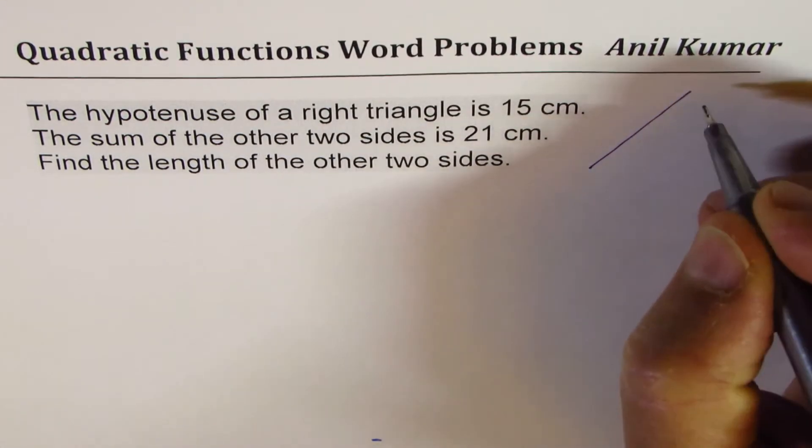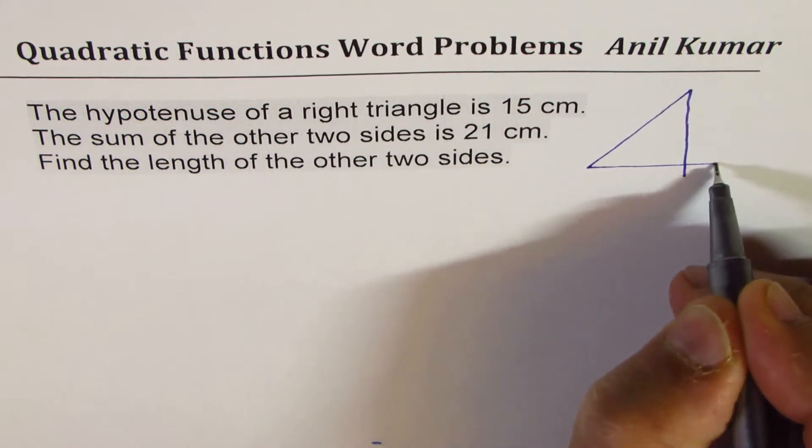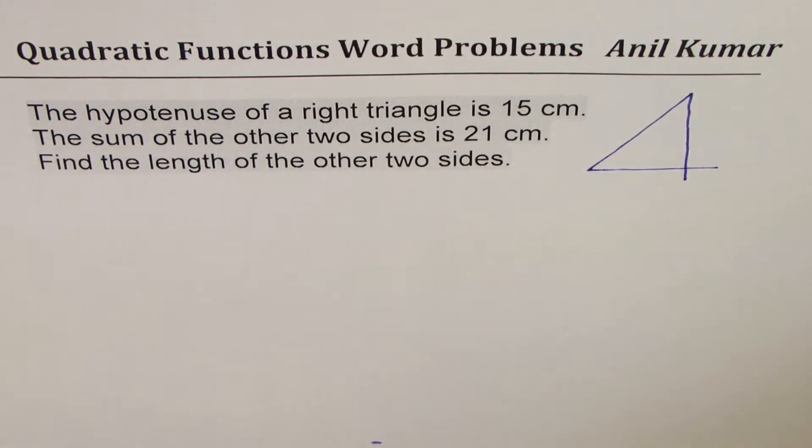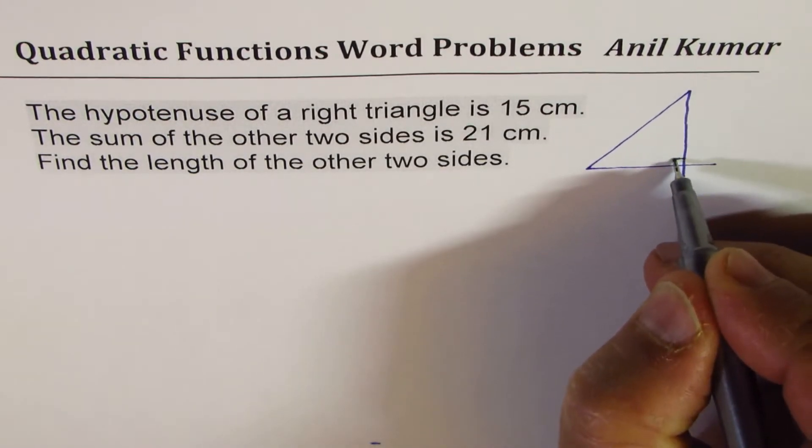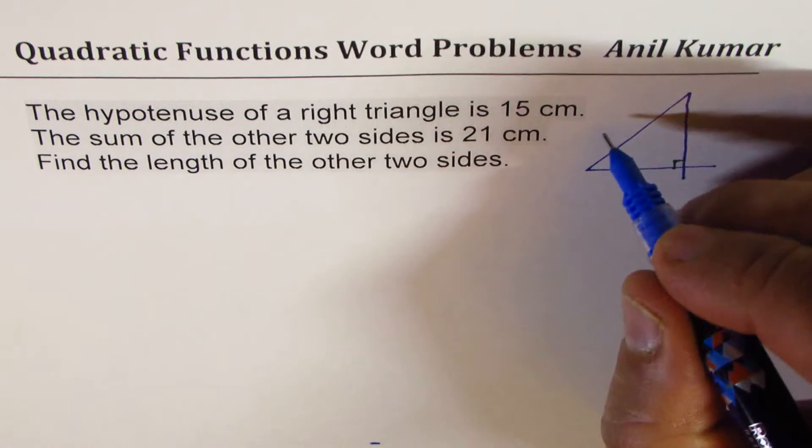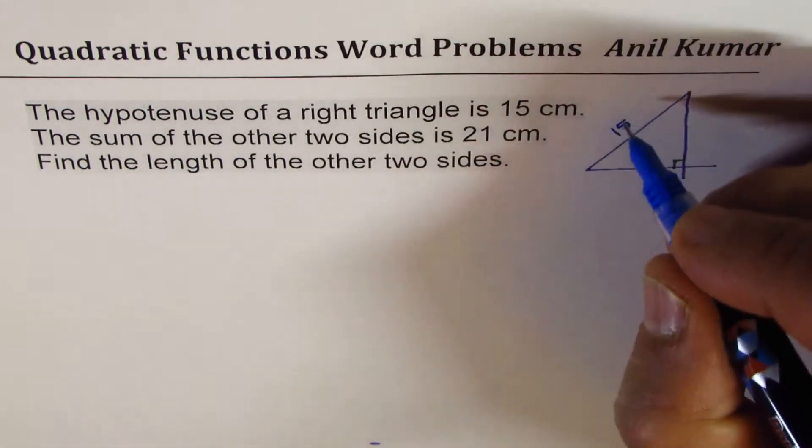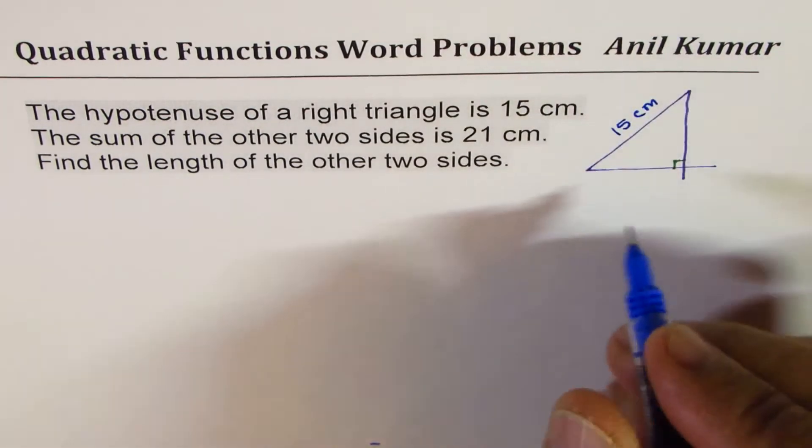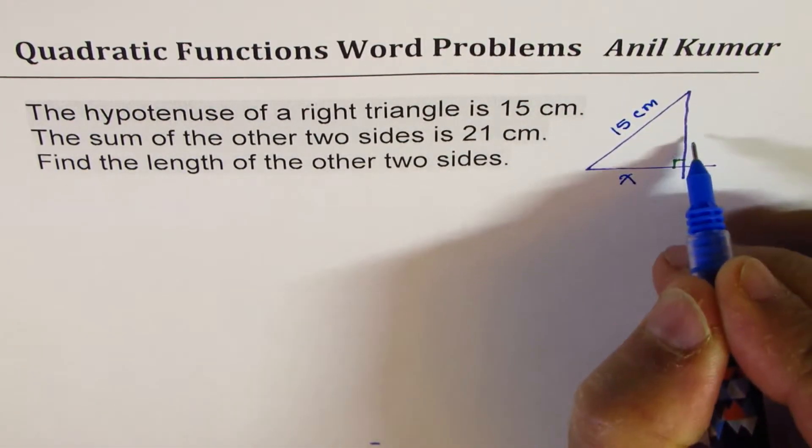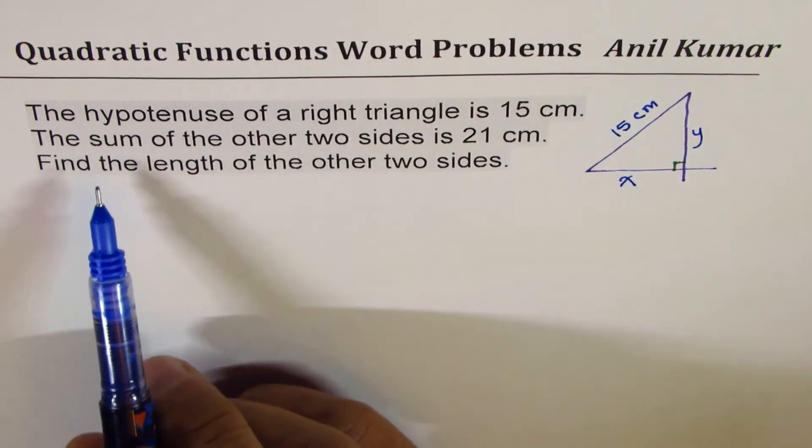Let's say that's the hypotenuse, these are the other two sides. They have to be perpendicular, correct? So we could draw like this. Let's label and define our variables. The hypotenuse is the longest side opposite to 90 degrees, which is 15 centimeters. Let the other two sides be x and y, both in centimeters.